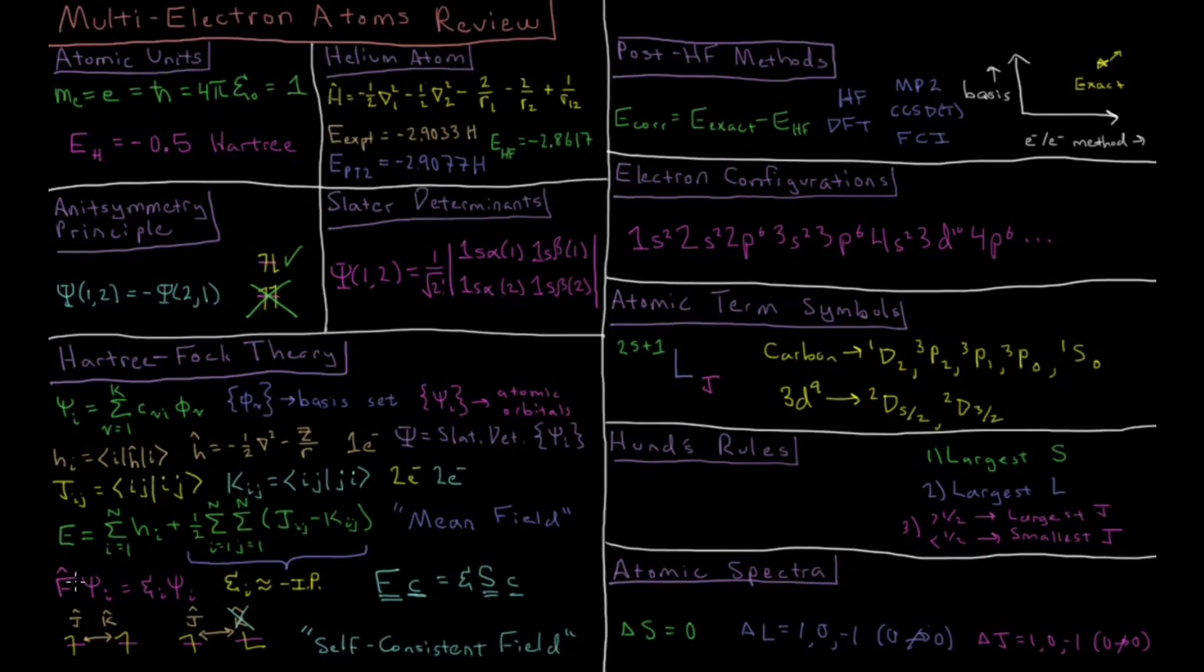In Hartree-Fock, we have the Fock operator which acts on an individual atomic orbital, and the eigenvalue it returns is the orbital energy for that orbital. The orbital energy is often interpreted as approximately minus the ionization potential for removing an electron from that atomic orbital. But note the total energy is not a sum of individual atomic orbital energies—that would be double counting the interaction between electrons.